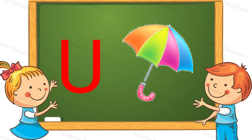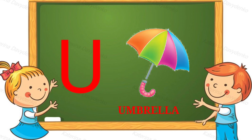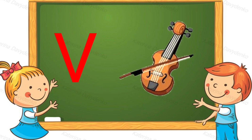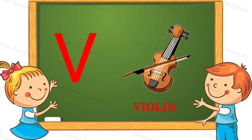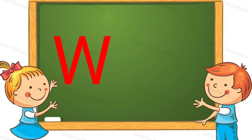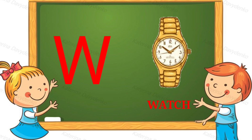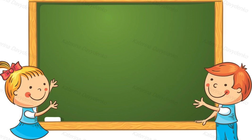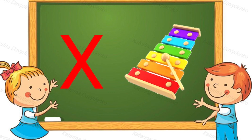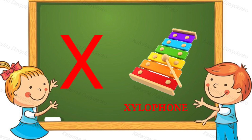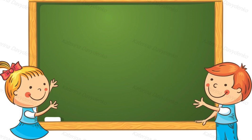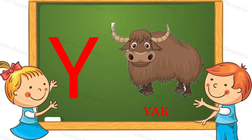U for umbrella, V for mат, V for alpha, W for white, Z for yellow, Baba Z for red, Y for dark.